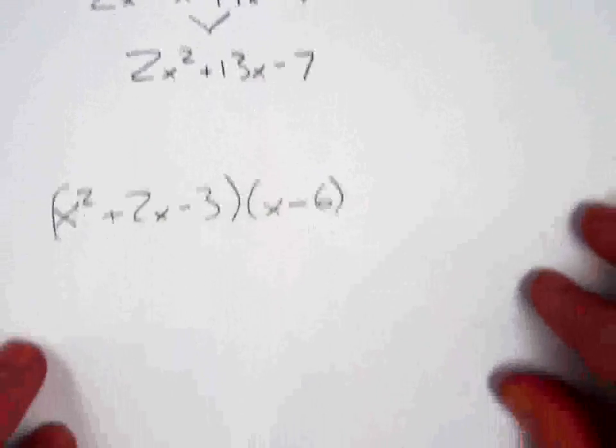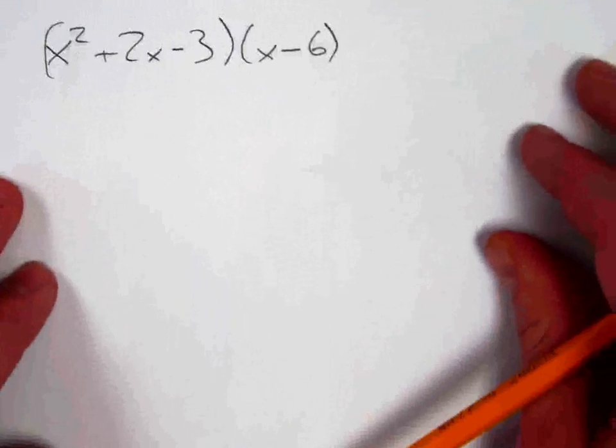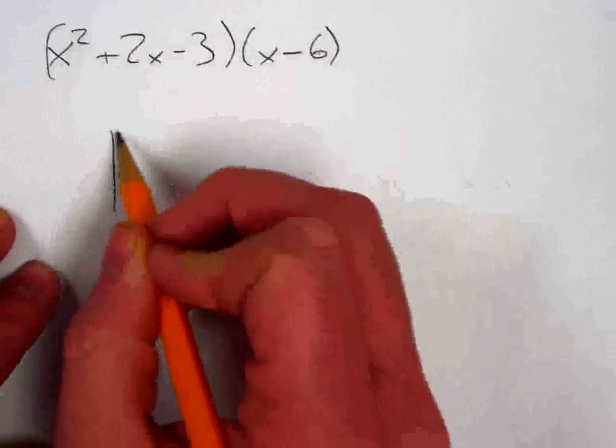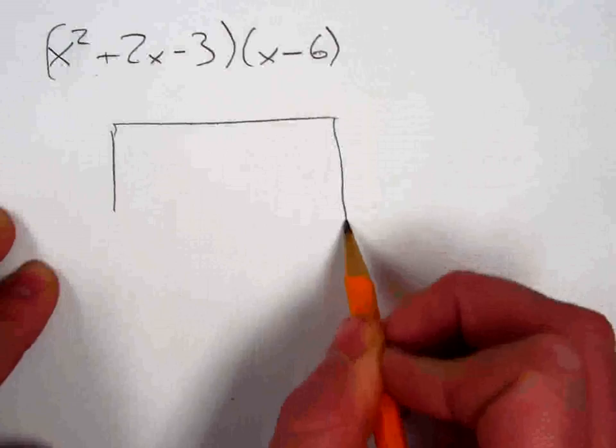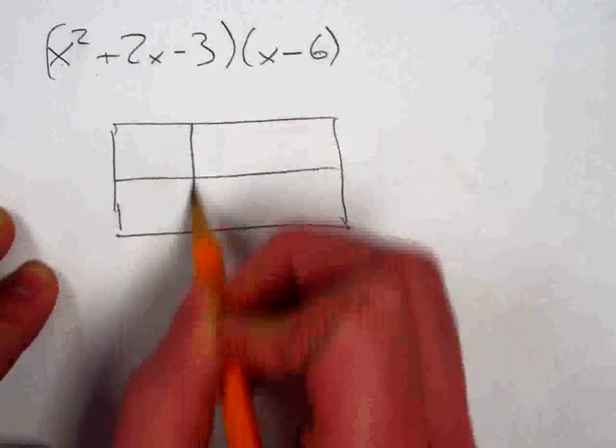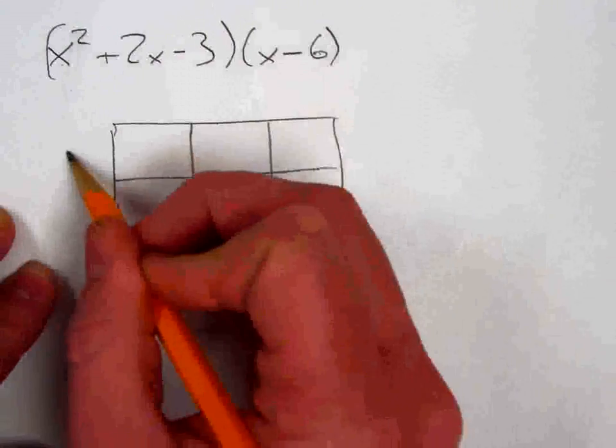Now to go to the trinomial times a binomial, I'm going to start here, and now my box is 3 terms by 2 terms because one of my factors has 3 terms, and the other one has 2. So I've got to slightly adjust my box to look like this. I'm just going to list everything here.